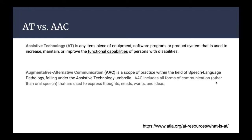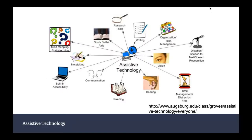AAC includes all forms of communication other than oral speech that are used to express thoughts, needs, wants, and ideas. Because I'm an SLP, a lot of the AT I do is AAC related, but I'm slowly branching out and learning more about all of these cross-discipline areas within assistive technology. When people think of assistive technology they kind of have tunnel vision, and I think that has a lot to do with what scope of practice they're working in.